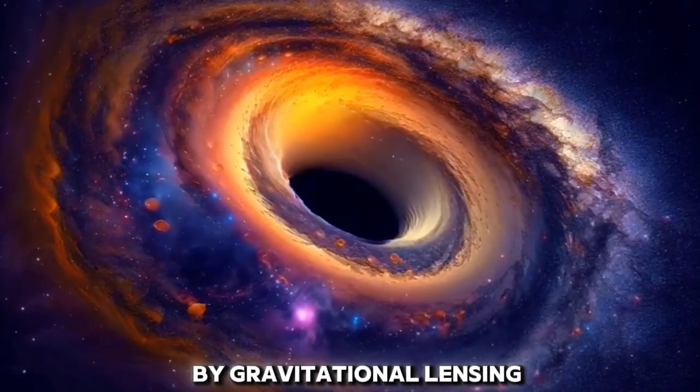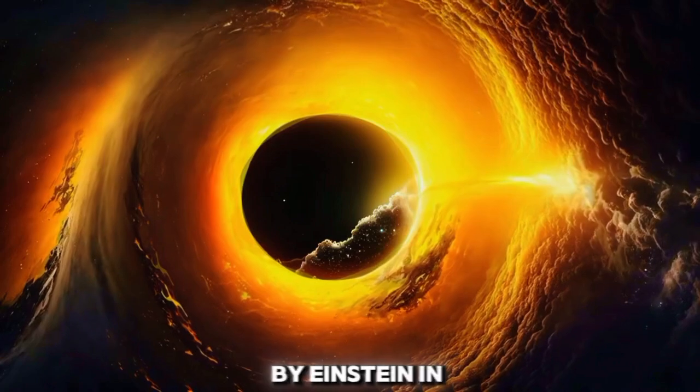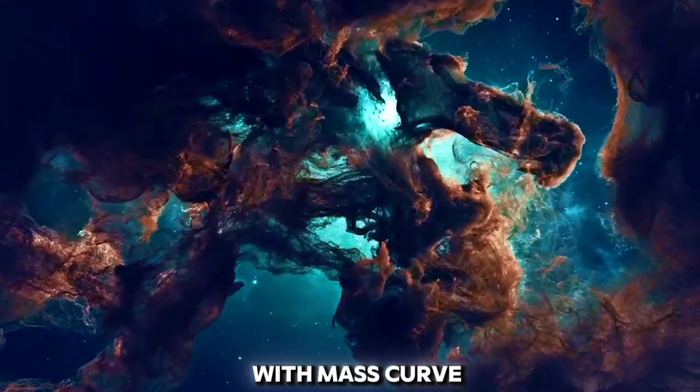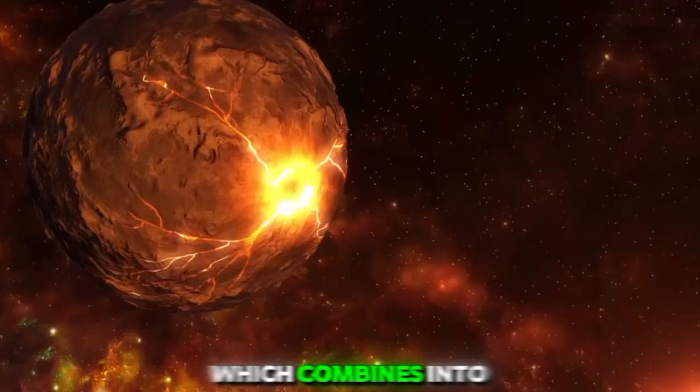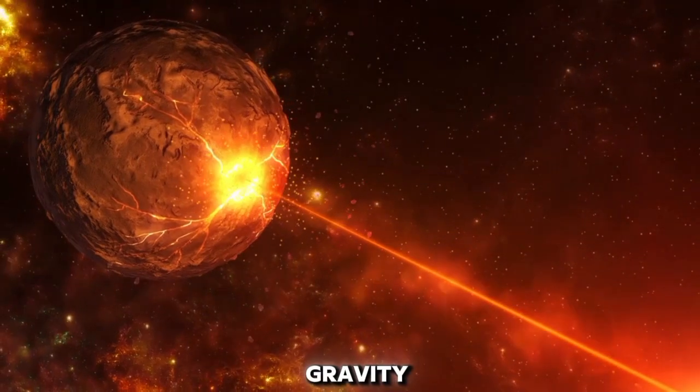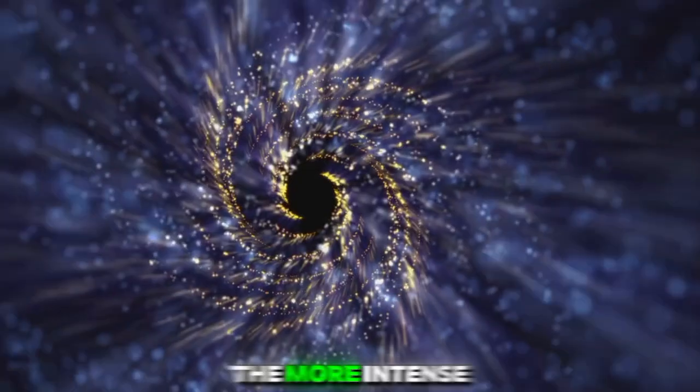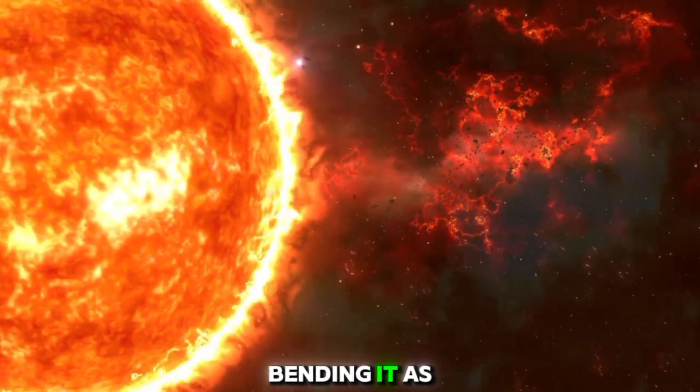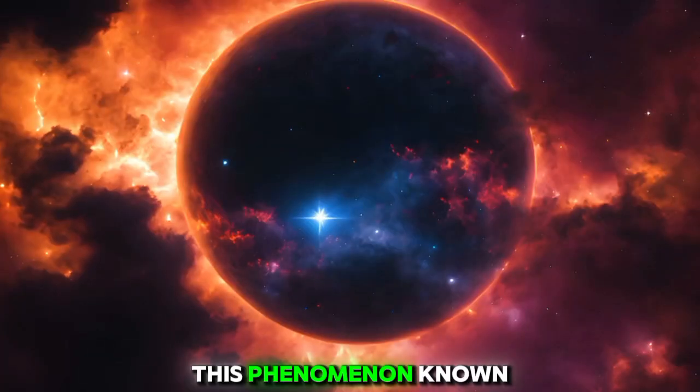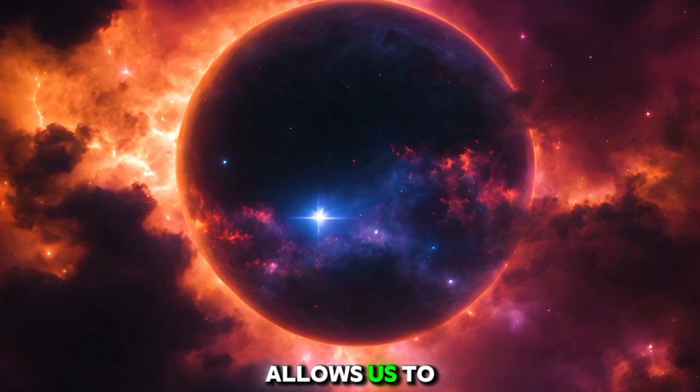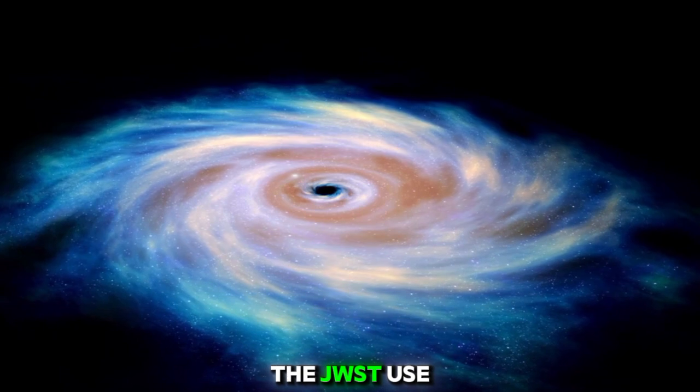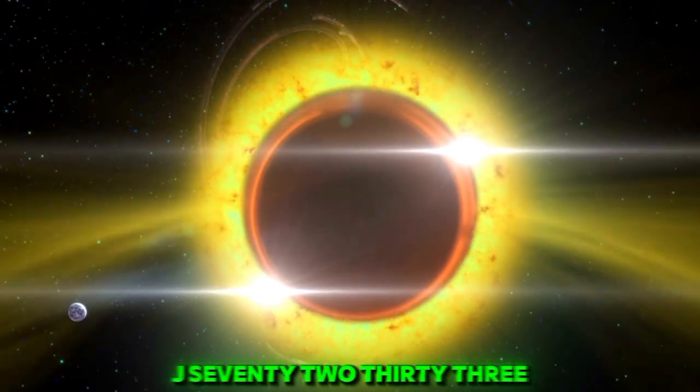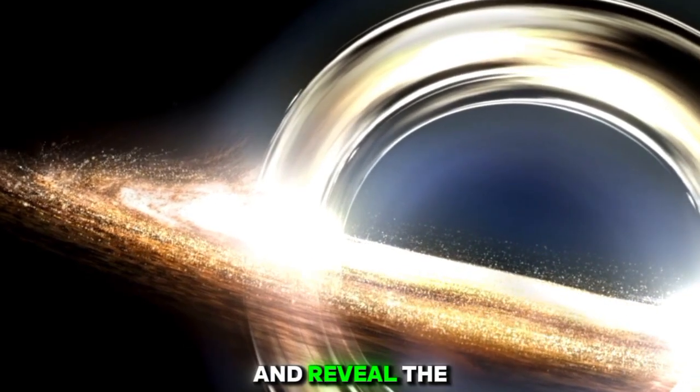This discovery was made possible by gravitational lensing, a phenomenon predicted by Einstein in 1915. Einstein's theory of general relativity proposes that objects with mass curve the fabric of spacetime, which combines into a single entity called spacetime. This curvature creates gravity, and the larger the object, the more intense the curvature. The shape of spacetime also affects the light emitted by stars, bending it as it passes near massive objects. This phenomenon, known as gravitational lensing, allows us to see distant objects that would otherwise be invisible. The JWST used this effect, supported by a galaxy cluster called SMX J7233, to amplify the brightness of distant galaxies and reveal the red quasar.